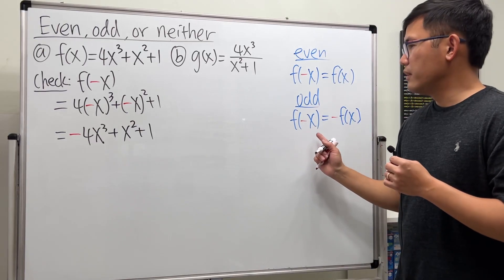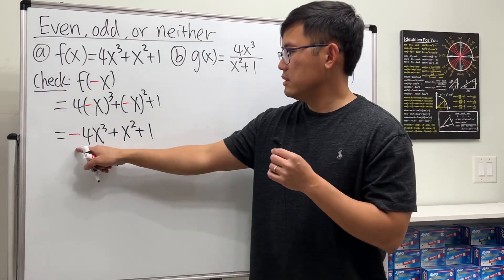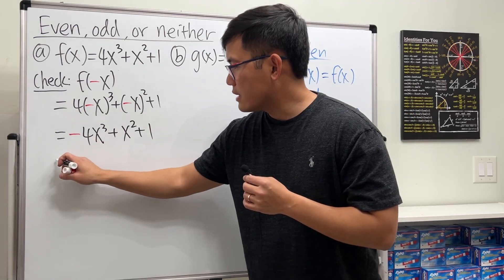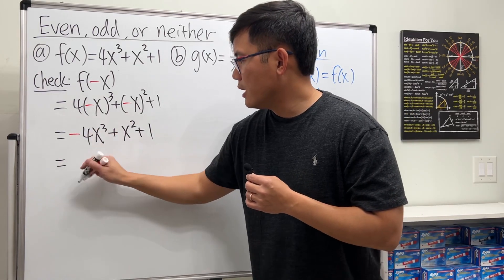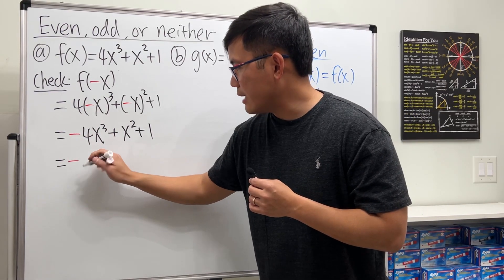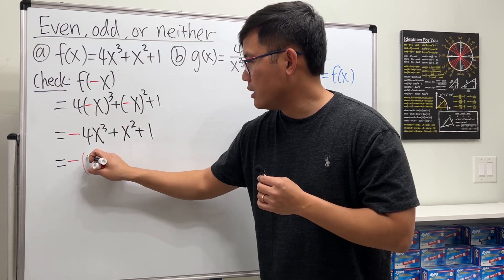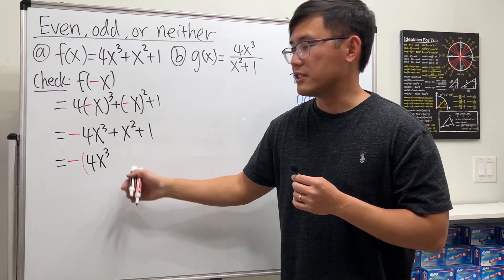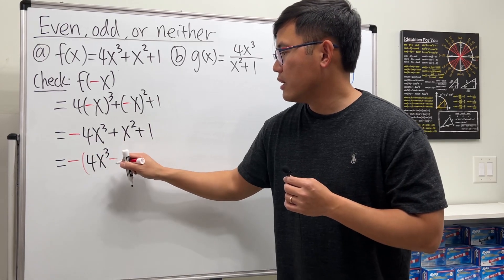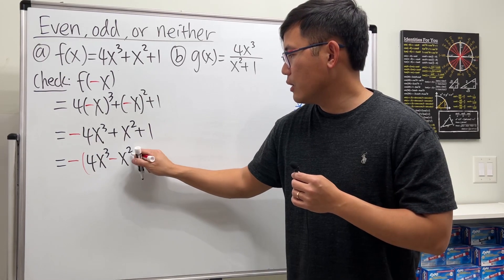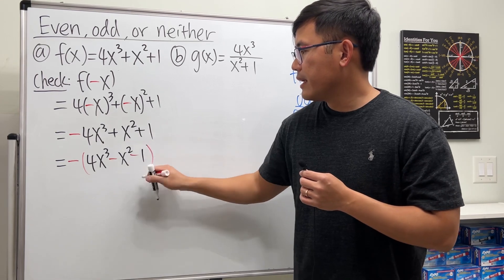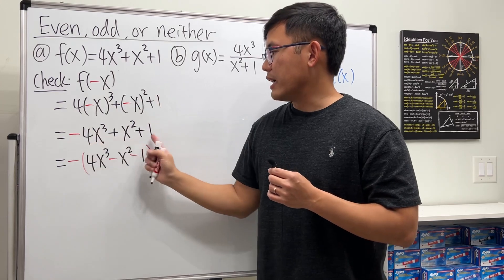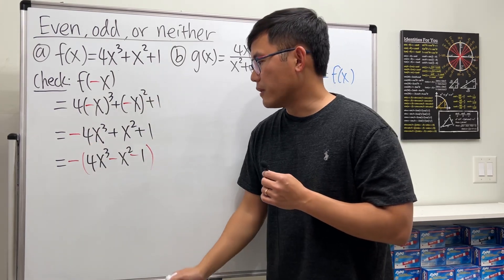We have a negative at the front — does that mean we have an odd function? Is this the same as negative f of x? No, because if you want to factor out the negative, this would be negative times 4x to the third power, and then you'd have to change the sign of the next term too. After factoring, it's no longer the same as the original. Be really careful here.